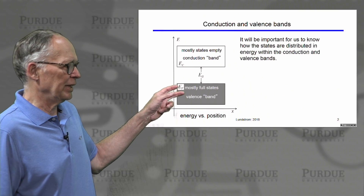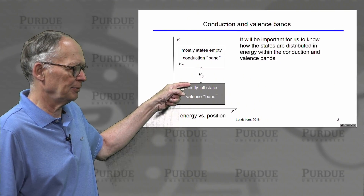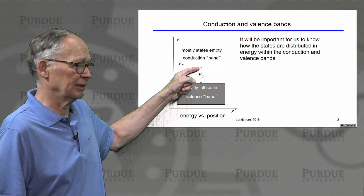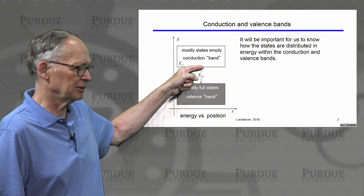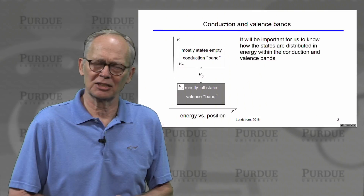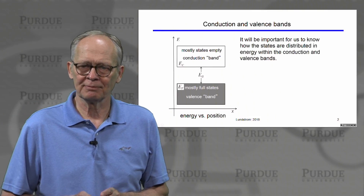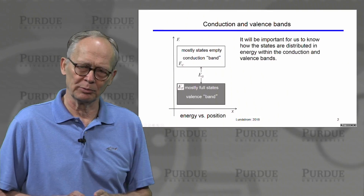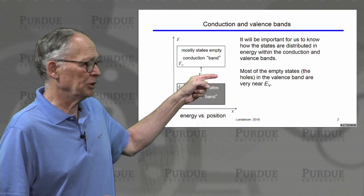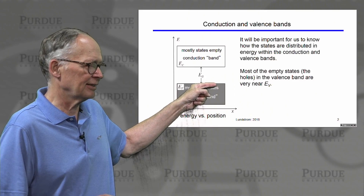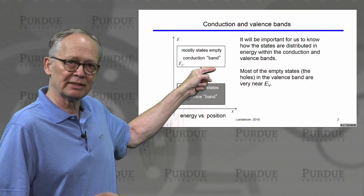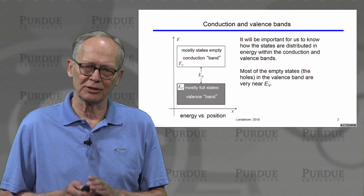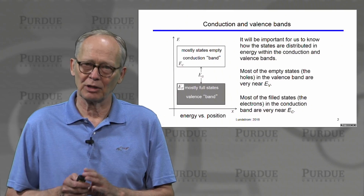Let me remind you that we have these valence bands that are mostly filled. There's a top of the valence band and a bottom so far down we don't need to worry about it. We have a conduction band consisting of states that are mostly empty. It's going to be important for us to know how the states are distributed within these bands — they're not uniformly distributed in energy. Most of the empty states in the valence band, the holes, are near the top of the valence band. Most of the electrons in the conduction band are near the bottom. So we only need to worry about how states are distributed in energy near the edges of the band. That's our focus in this lecture.